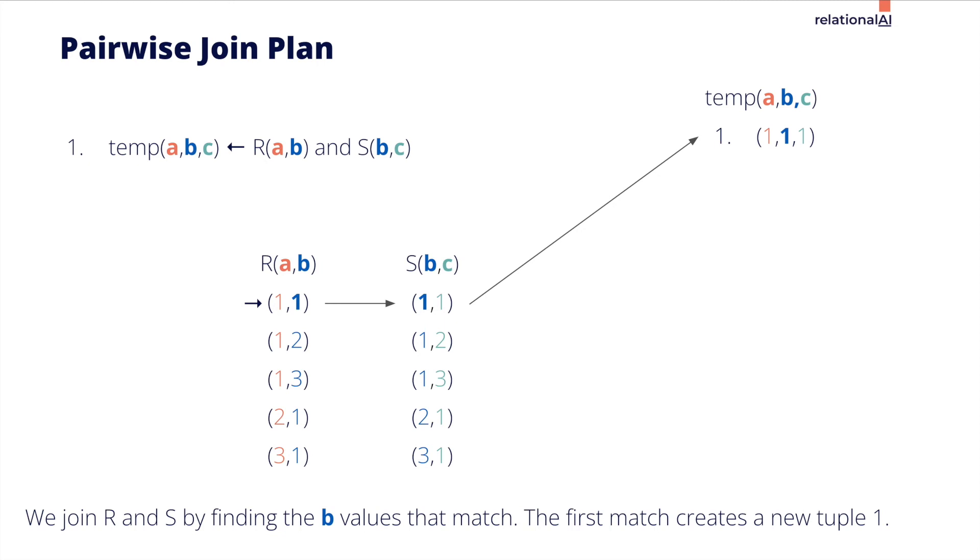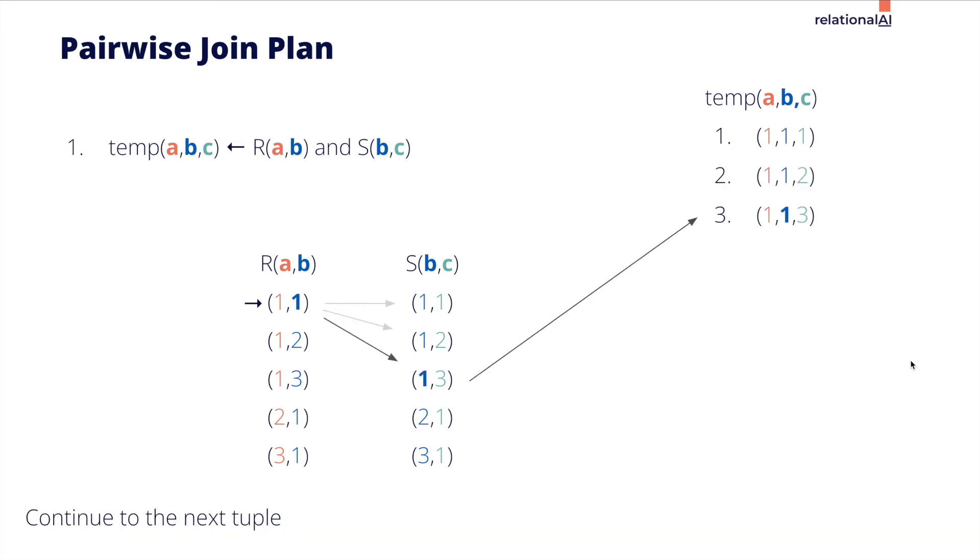It first creates the temp table by finding values in R that match values in S, and emits the matching data. It continues to do this for all the data in the tables.